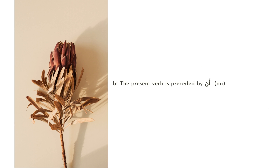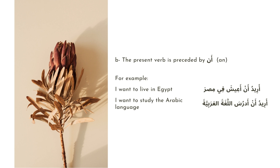The second case is when the present verb is preceded by 'an'. For example, when we say 'I want to live in Egypt.' Aishya is our present verb, also in the mansub form. Another example: 'urid an adrosa logat al-arabiyya' — I want to study the Arabic language. Adrosa here is our present verb, also in the mansub form.